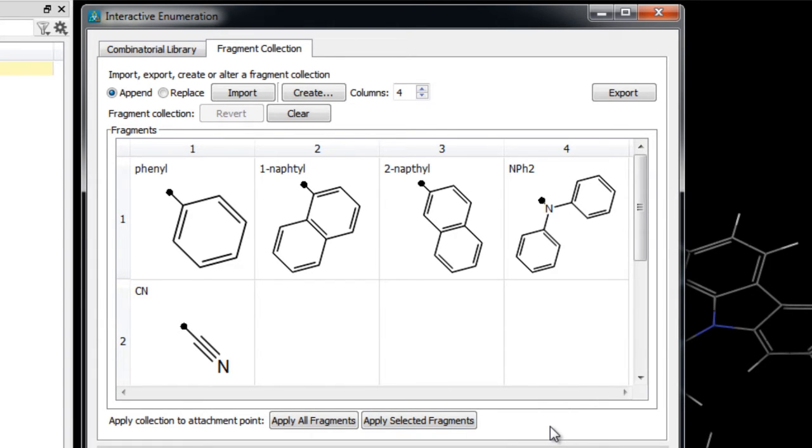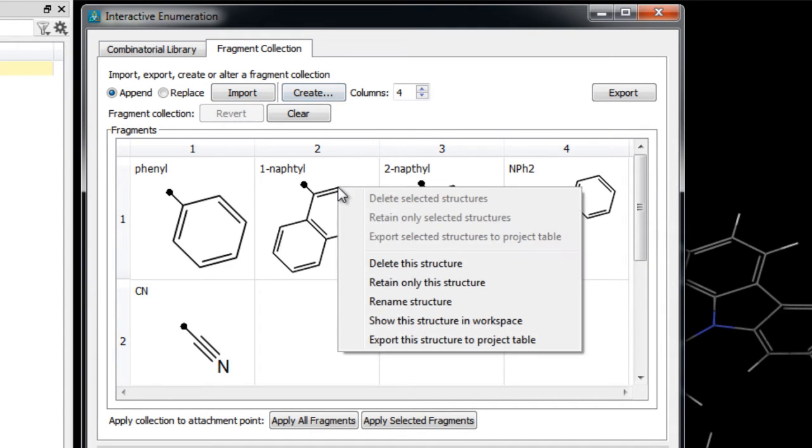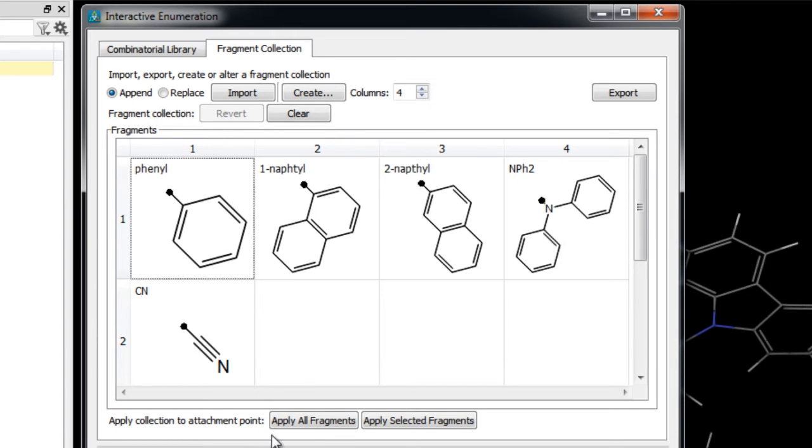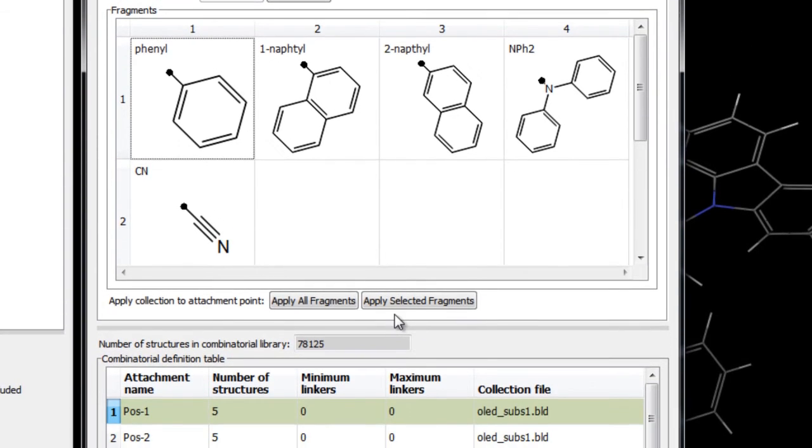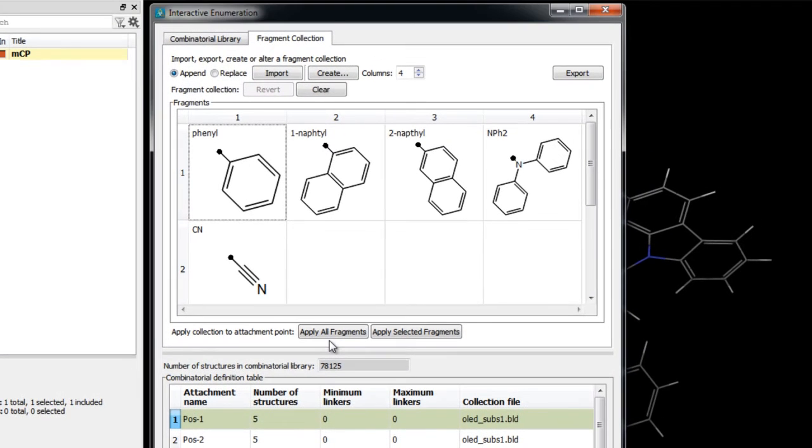Now again we'll discuss this tab in more detail later on, but for now we can quickly see there are options for importing additional fragments or creating new fragments from scratch, and the right-click menu has additional options such as removing fragments. Also there is the option to apply only selected fragments rather than all the fragments at a given attachment position.